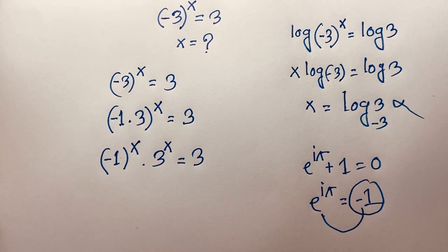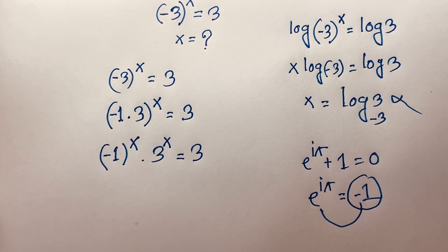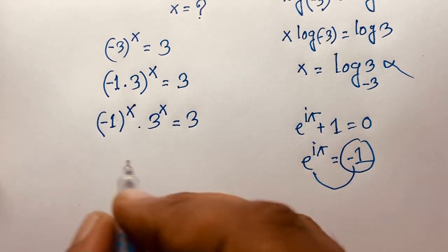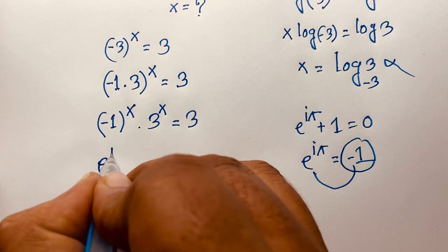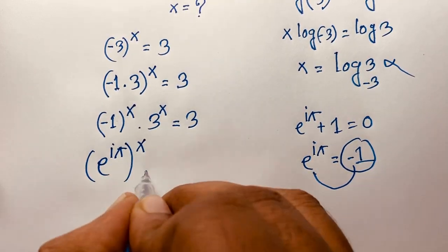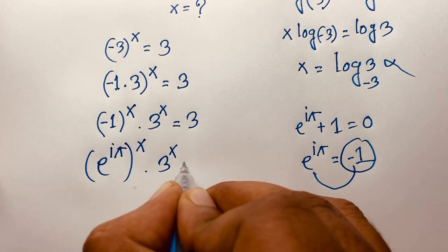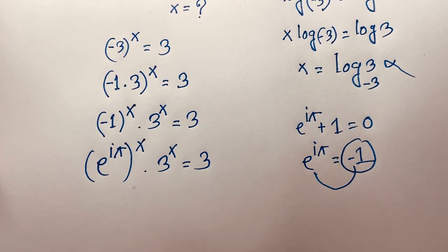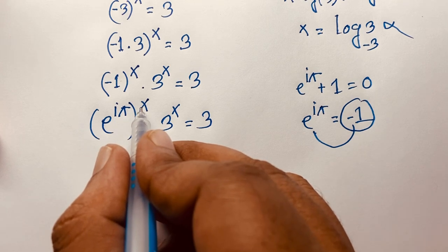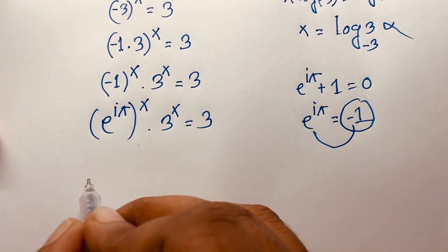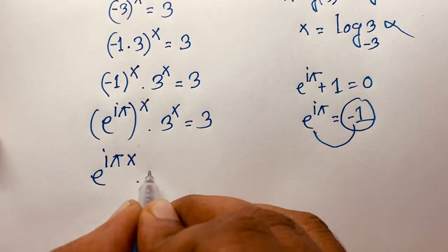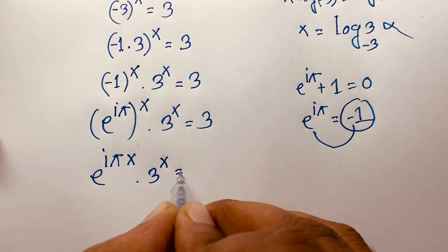I will solve this question in two steps. So minus 1 to the power of x is e to the power of iπ, all to the power of x. Using the exponential law, multiplying the exponents together, it will be e to the power of iπx times 3 to the power of x is equal to 3.